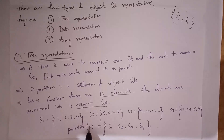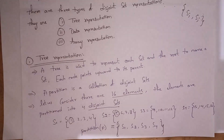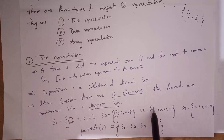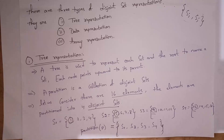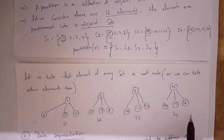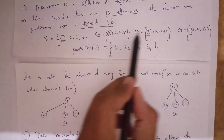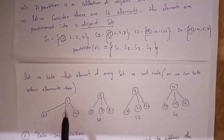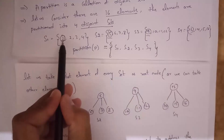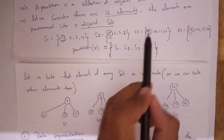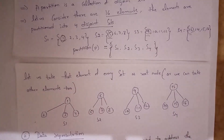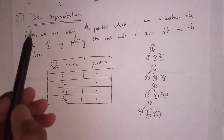So the partition P = {S1, S2, S3, S4}. Now I will draw trees for these four disjoint sets. In all four sets, I consider the first element as the root node and the remaining elements as children. So 1, 5, 9, and 13 are root nodes, and the remaining elements are children. Not only the first element — you can take any element as root node.